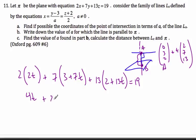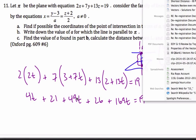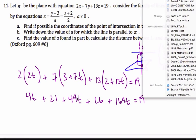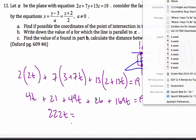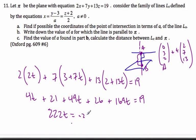So I get 4t plus 21 plus 49t plus 26 plus 169t equals 19. When I add these up, I get 222t plus 47 equals 19. So 222t equals -28, and t equals -28 divided by 222.